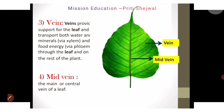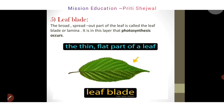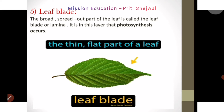The next one is leaf blade. What is leaf blade? The broad, spread-out part of the leaf is called the leaf blade or lamina. It is in this layer that photosynthesis occurs. You can see in the image — the thin, flat part of a leaf is called the leaf blade. Another name for leaf blade is lamina. It is in this layer that photosynthesis occurs.